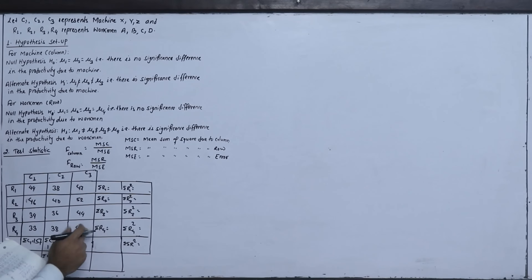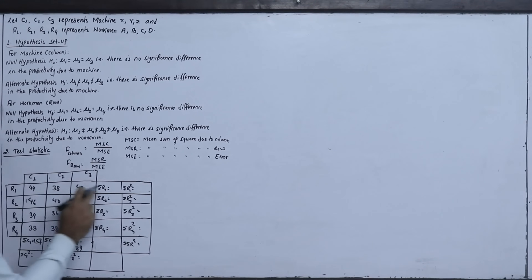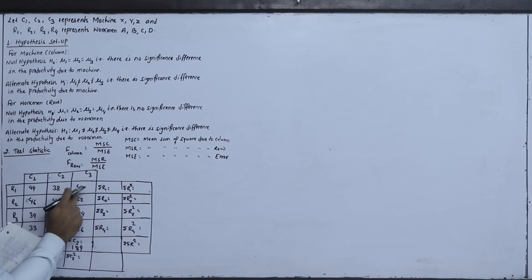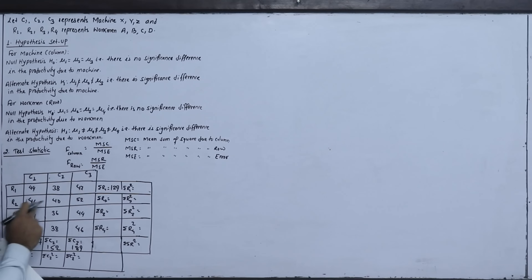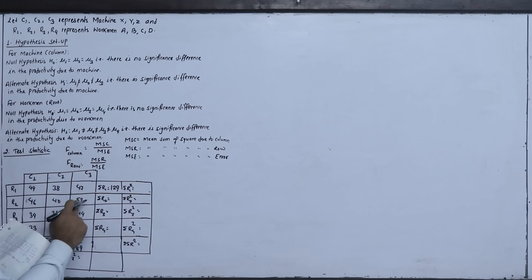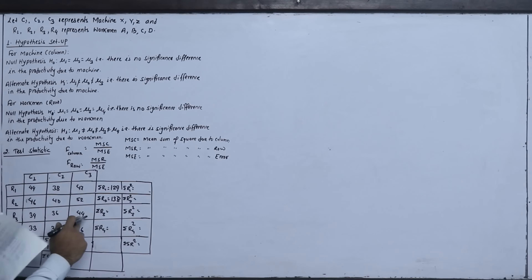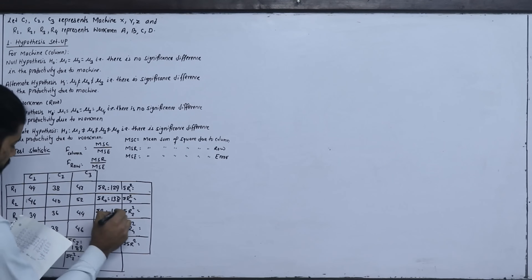The column totals are: C1 = 157, C2 = 152, C3 = 180, C4 = 189, giving grand total. Row totals are: R1 = 44 + 38 + 47 = 129, R2 = 46 + 40 + 52 = 138, R3 = 34 + 36 + 44 = 114.